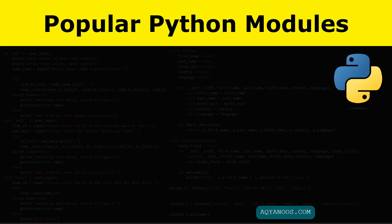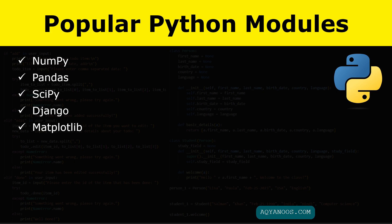Some popular Python modules or libraries: NumPy is a library used for working with mathematical data. Pandas is used for data analysis. SciPy, which stands for Scientific Python, is used for scientific research. Django is used for web development.